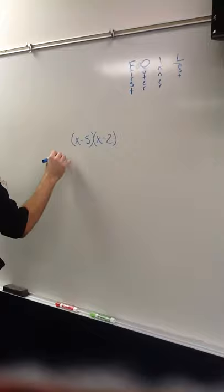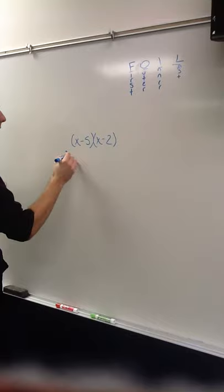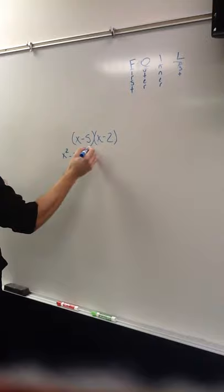Outer, the outer terms, you get x and negative 2, which would be minus 2x. Inner, you get minus 5 and x, so that's minus 5x.